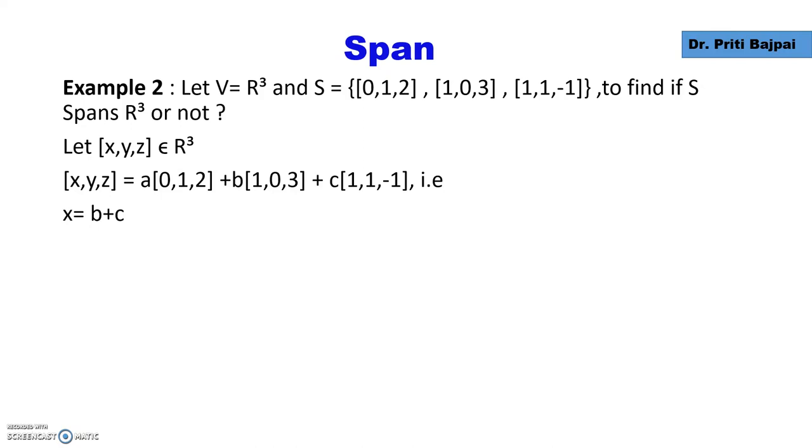Now X,Y,Z will be A times [0,1,2] plus B times [1,0,3] plus C times [1,1,-1]. If we equate the left and right hand side, we get X = B+C, Y = A+C, and Z = 2A+3B-C.